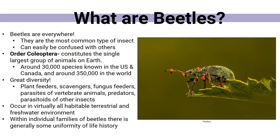This is a very diverse group. They eat many different things — sometimes they're fungus eaters, sometimes they predate on other vertebrate animals, sometimes they're parasites, scavengers, or plant feeders. There's a huge diversity in what they look like: their colors, shapes, mouth parts, and antennae. They virtually occur in every terrestrial and freshwater environment. Within the families we'll talk about today, you'll notice some characteristics that are very similar between families, and that's how we group things taxonomically.